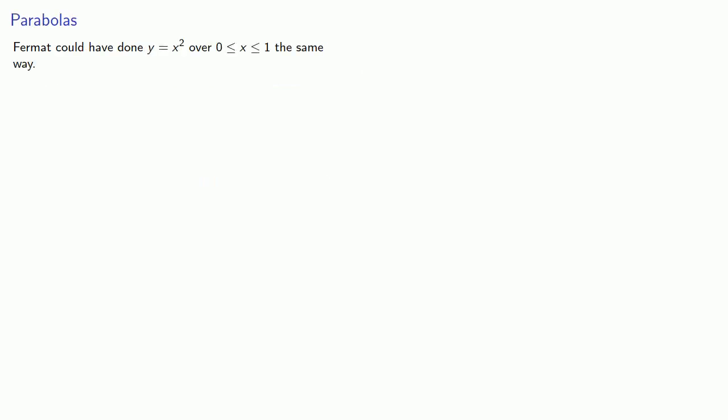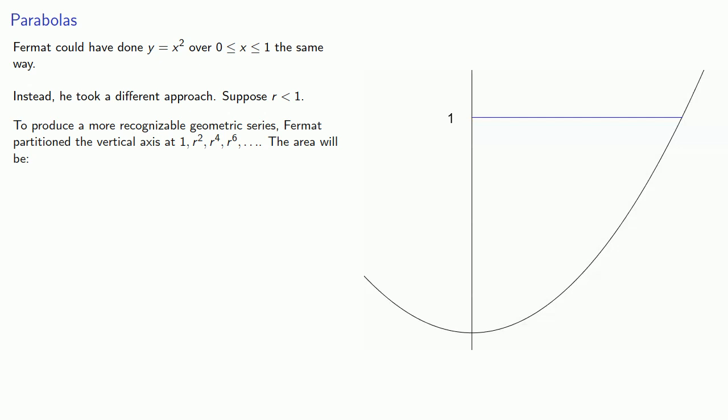Now, Fermat could have done y equals x squared over the interval between 0 and 1 in exactly the same way. Instead, he took a different approach. Suppose we take r less than 1. To produce a more recognizable geometric series, Fermat partitioned the vertical axis at 1, r squared, r to the 4th, r to the 6th, and so on. And again, he computed the areas.